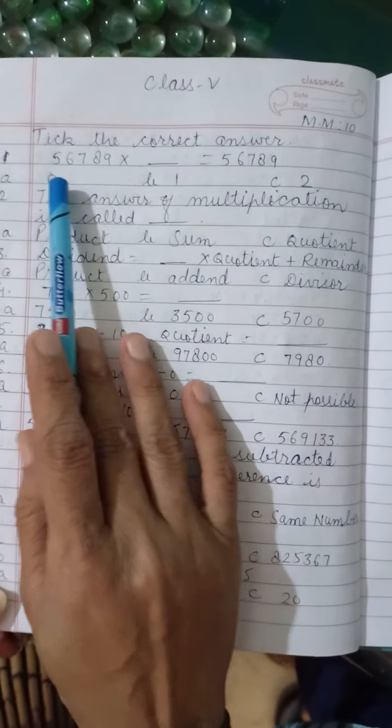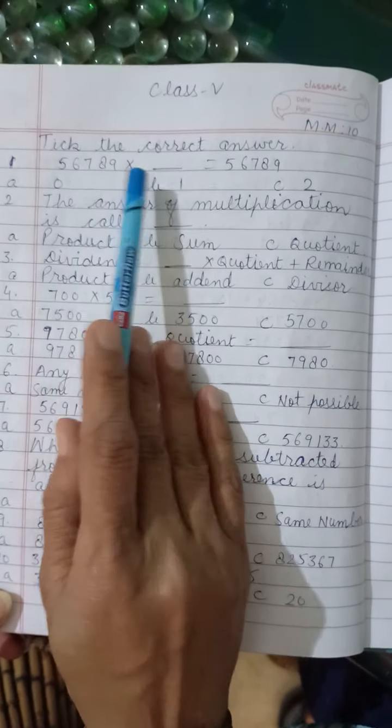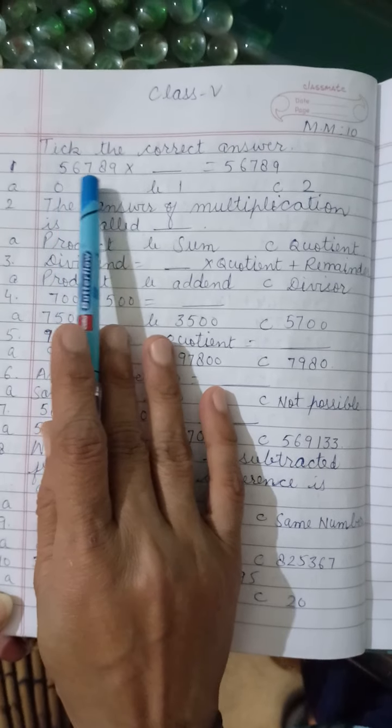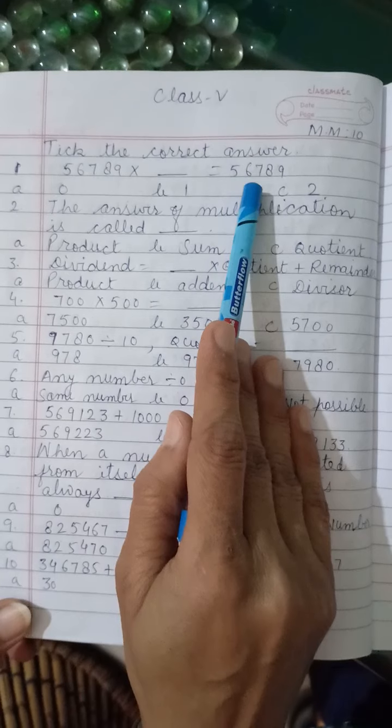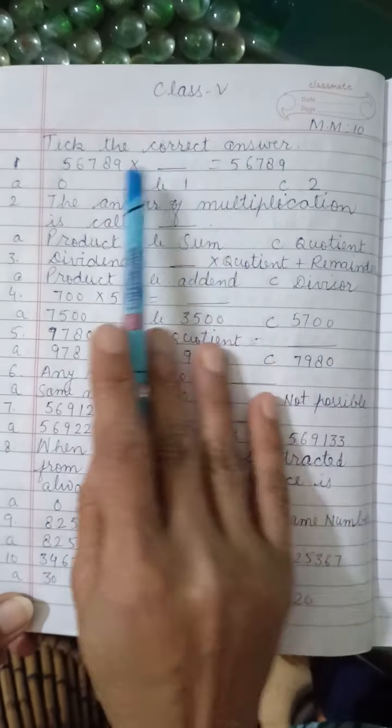Tick the correct answer. 56,789 times dash is equal to 56,789. What you can see here? This number is same to same.